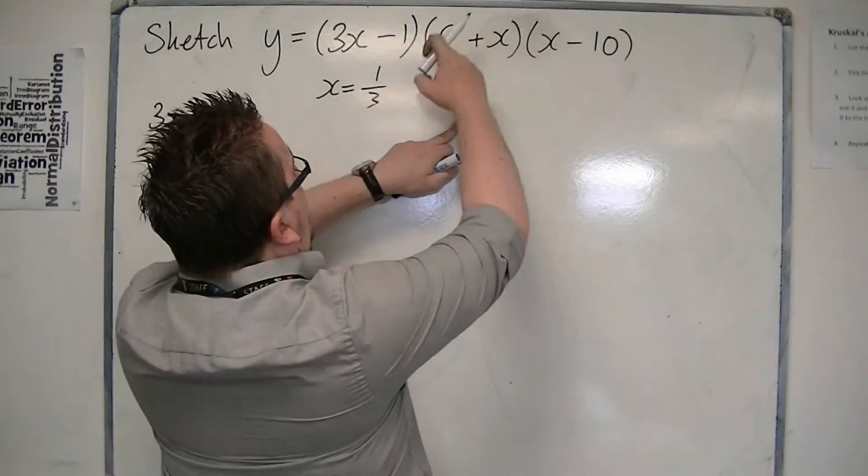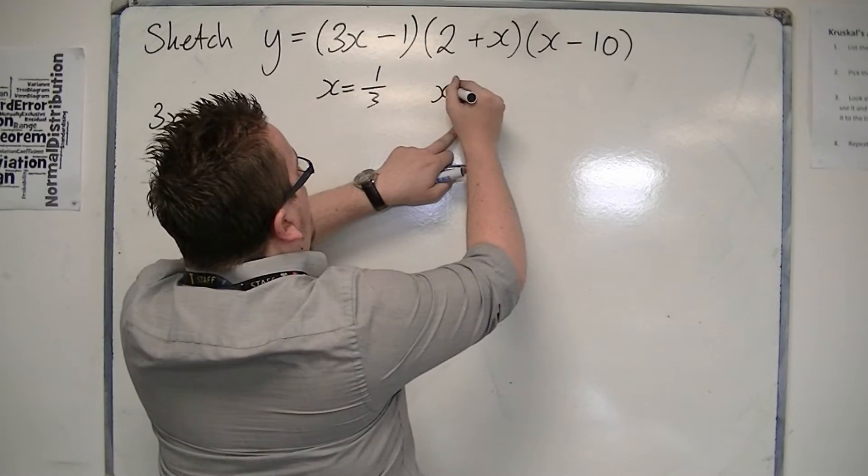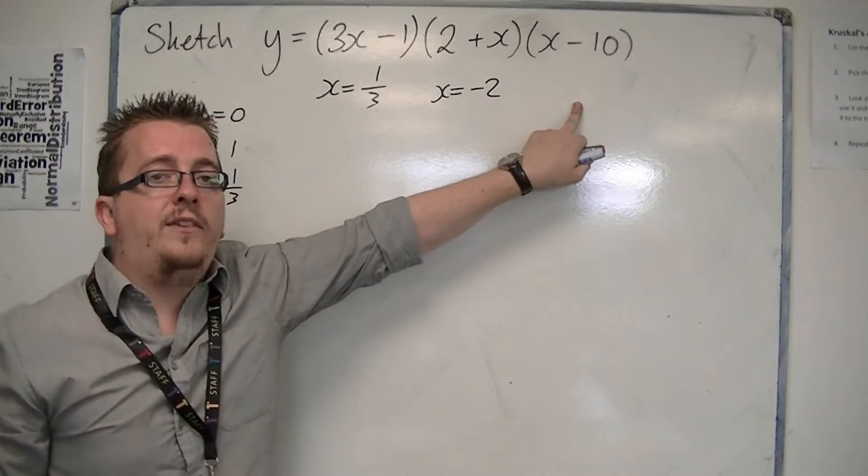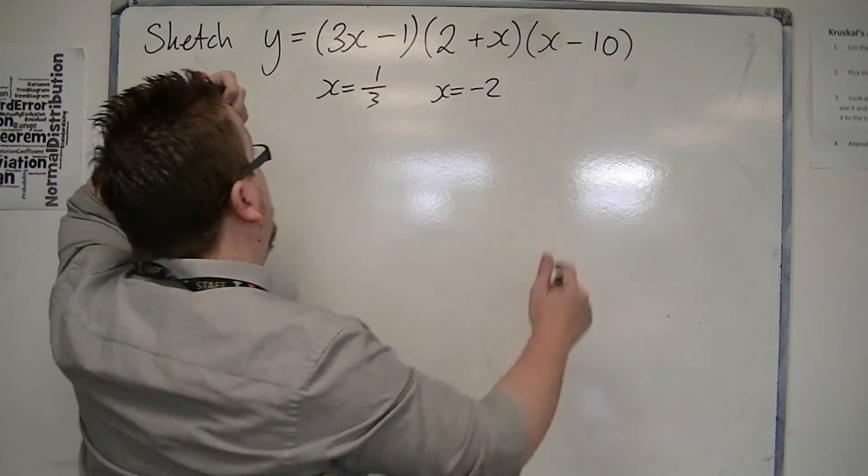It could also cross the x-axis when this bracket is 0, so when x is minus 2. And it will also cross the x-axis when this bracket is 0, so that's when x is 10.